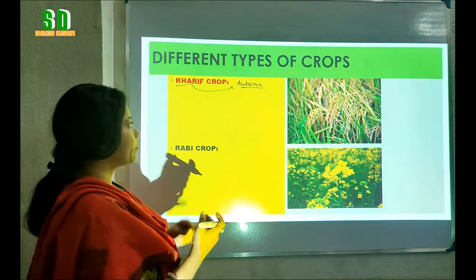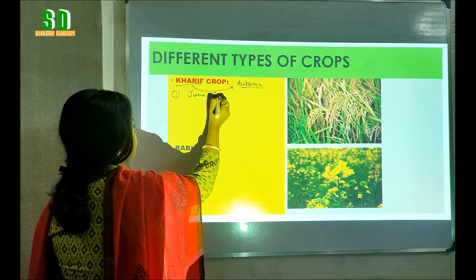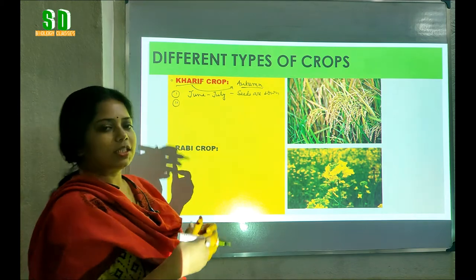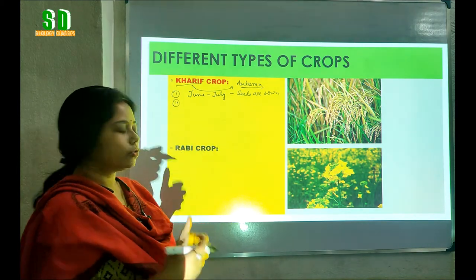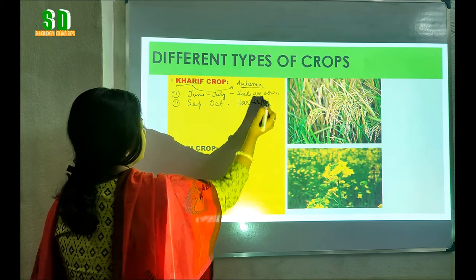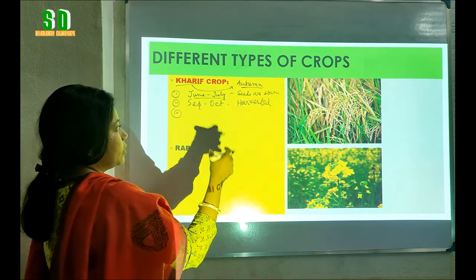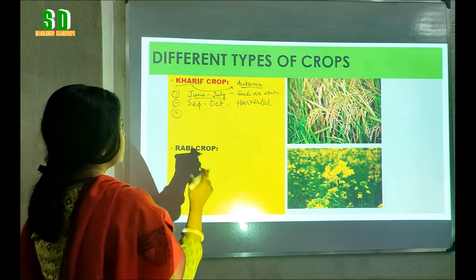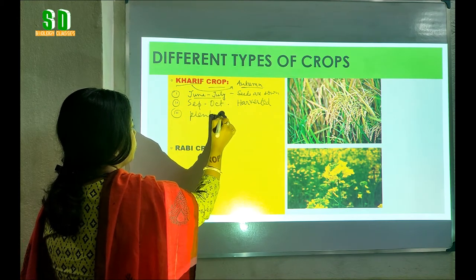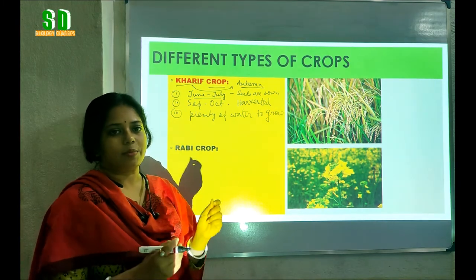But what are the features of these crops? First of all, the seeds of these crops are sown during the month of June and July. They take a few months to grow, and during September and October they are harvested. As they are grown during the June-July months, which are the monsoon seasons, these crop plants need plenty of water to grow.